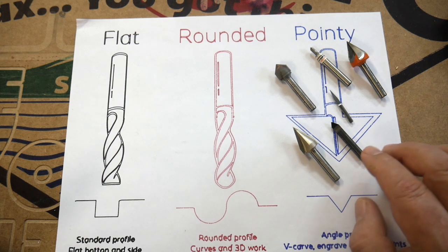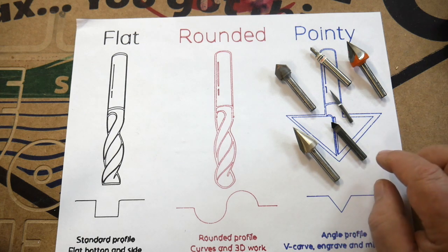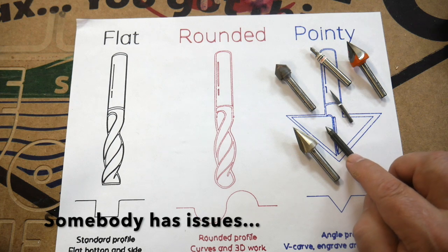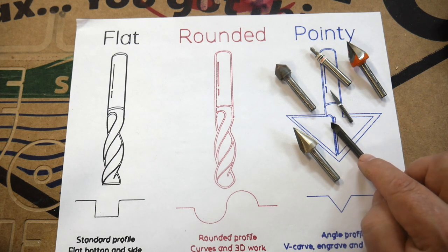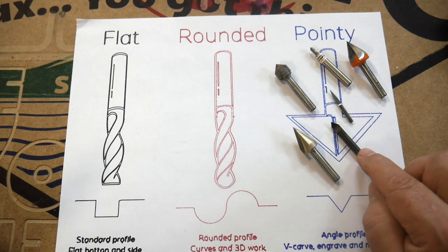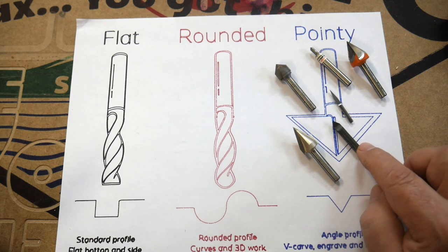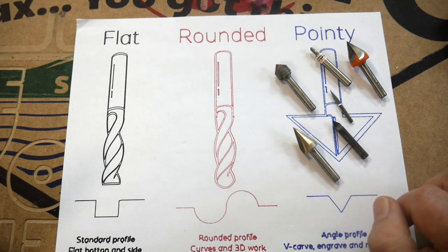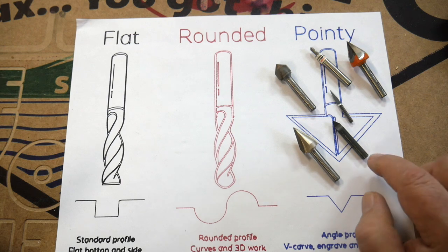So you need to bear that in mind. You may need to get a special metric chuck. I have one that I keep around just because some of the bits that I get do come in the metric sizes. So definitely one thing to keep an eye out for when you're buying bits online.